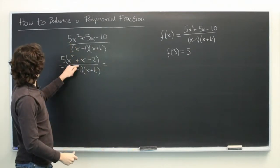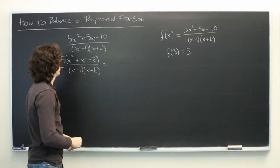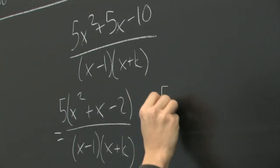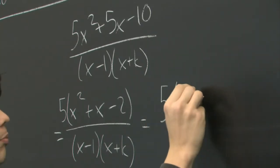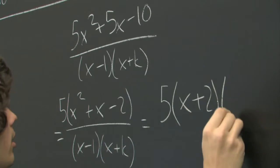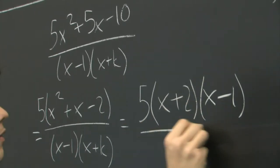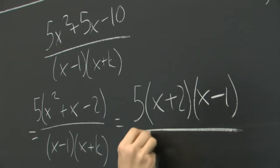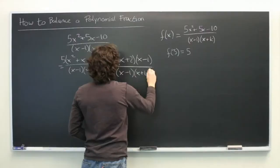But this polynomial here, x squared plus x minus 2, can be factored, which is convenient. We get (x plus 2) times (x minus 1), and again we have (x minus 1) times (x plus k) on the bottom.